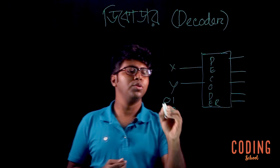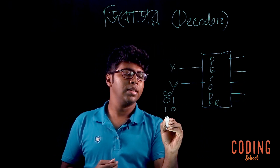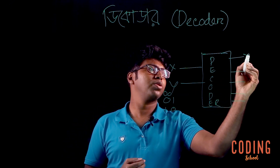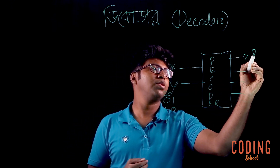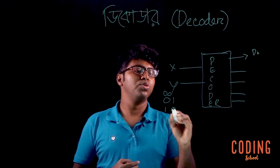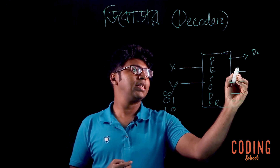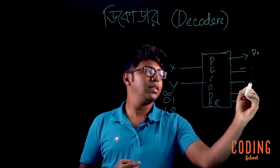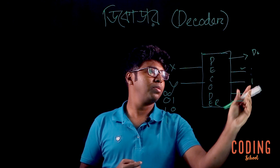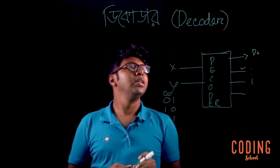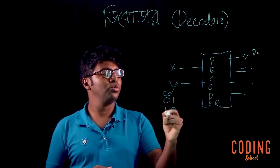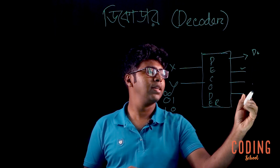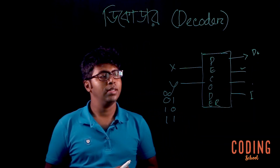When the input is 0,0 that equals output 1. When the input is 0,1 the output is 0,1. When the input is 1,1 the output becomes 0,1,1. So we show this decoder.